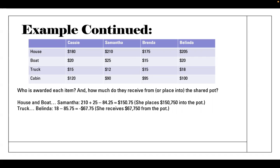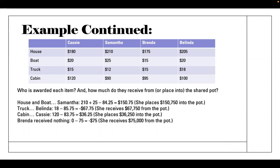The truck goes to Belinda for $18,000. Her fair share is $85,750, so $18,000 minus $85,750 gives negative $67,750 — meaning Belinda receives $67,750 from the pot to bring her up to her fair share. The cabin goes to Cassie at $120,000; subtract her fair share and you get $36,250, so Cassie places $36,250 into the pot. Brenda received nothing — valued at $0 — but her fair share is $75,000, so she receives $75,000 from the pot.